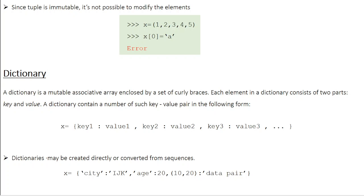The second data type specific to Python is dictionary. Dictionary is a mutable associative array enclosed by a set of curly braces. Each element in a dictionary consists of two parts: a key part and a value part. A dictionary contains a number of such key-value pairs in the format: x = {key1: value1, key2: value2, key3: value3, ...}. Keys and values are separated by a colon, and individual elements are separated by commas.